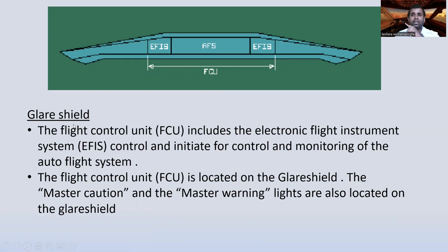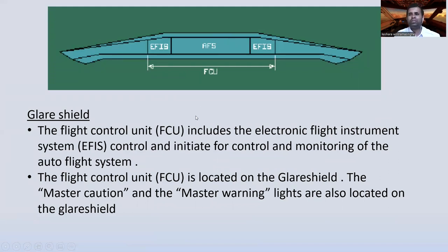Here is the glare shield in the cockpit. The Flight Control Unit (FCU) includes the Electronic Flight Instrument System (EFIS) controls and provides control and monitoring of the auto-flight system. The flight control unit is located on the glare shield. The master caution and master warning lights are also located on the glare shield.